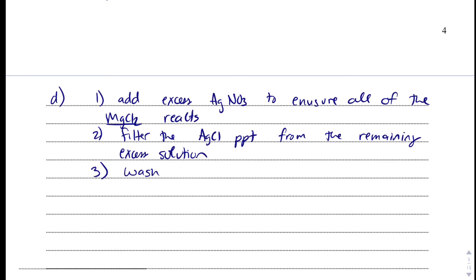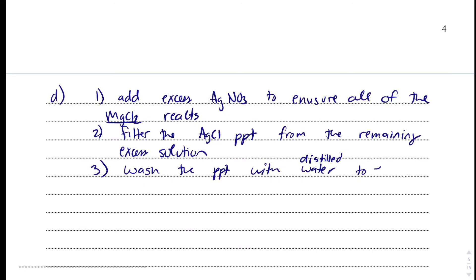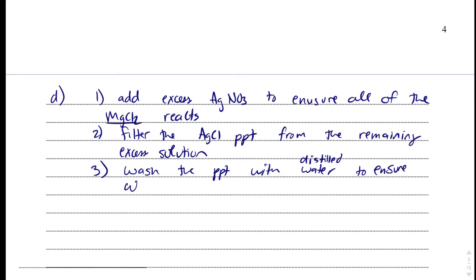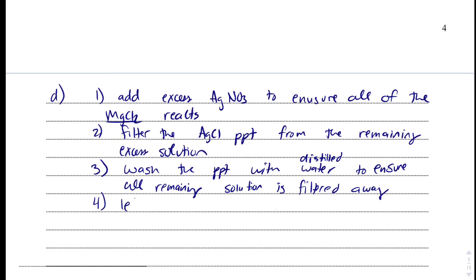We will wash the precipitate with water. And typically, I like to say distilled water just to make sure that we know that it's pure water. Wash the precipitate with distilled water to ensure all remaining solution is gone. And then, four, we're going to let this dry. So, let the precipitate dry completely. I'd probably use an oven if I was doing this, but we don't need to get into that kind of detail here. Maybe use an oven.